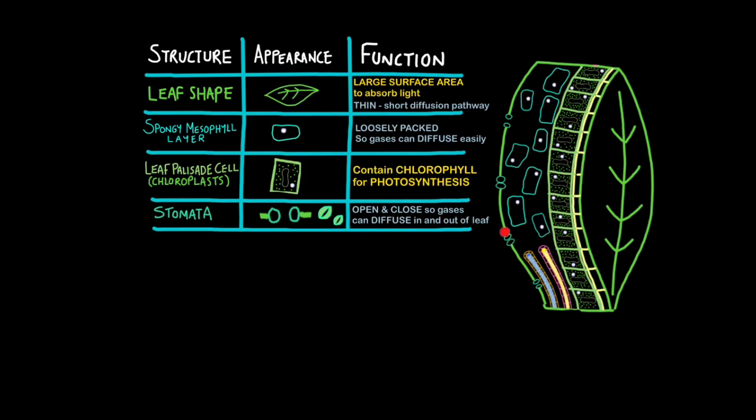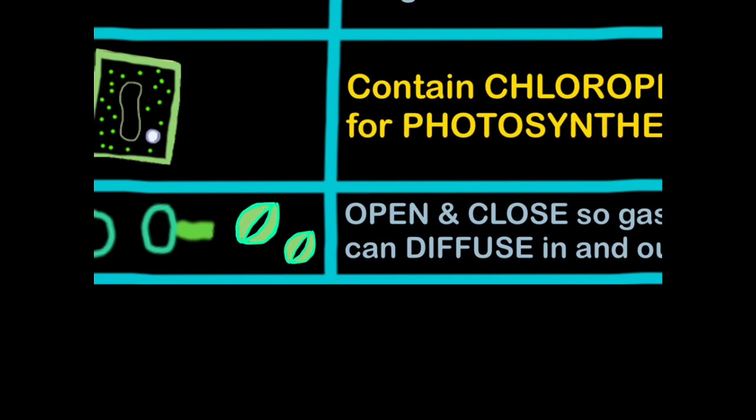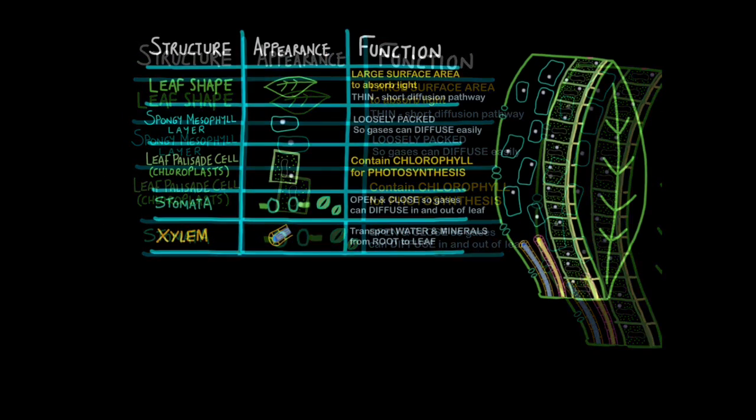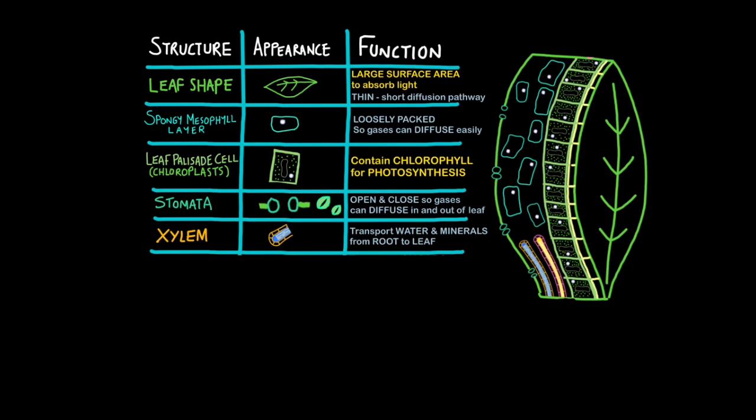Now, for gas exchange, we have stomata on the underside of the leaf. They can open and close so gases can diffuse in and out of the leaf. If you have to identify stomata by picture in exam, that's generally what they tend to look like, like little lips. The xylem transports water and minerals from the root to the leaf. The phloem will transport sugars away from the leaf for storage and respiration. And finally, while we are discussing plant structure, I thought I'd introduce the root hair cell.